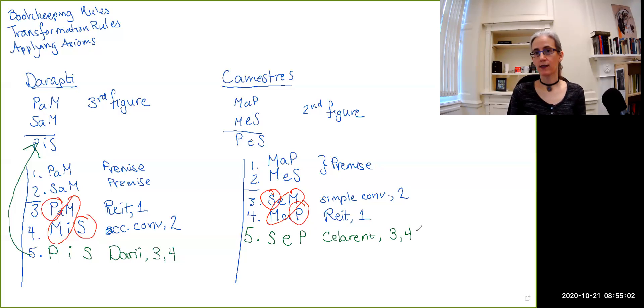This is not quite what we want. What we want is PeS. So we're very close—we've got the right copula, we've got the right terms, they're just in the wrong order. But hurrah, we can actually apply simple conversion to an e claim, which means line six: we swap the order of the terms to get PeS. This is simple conversion line five. And there we go! PeS is exactly what we wanted to try to prove. We did it!